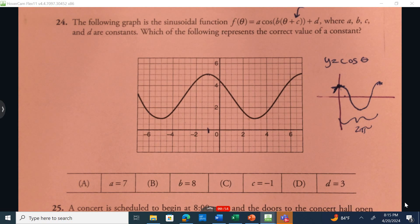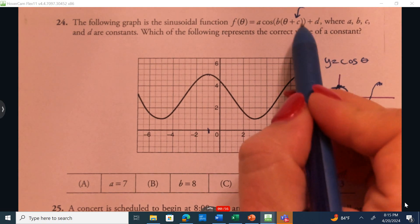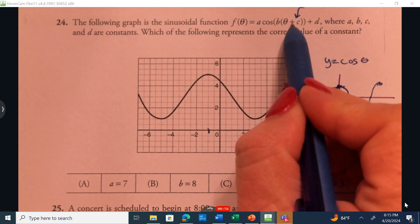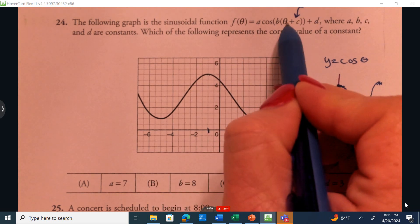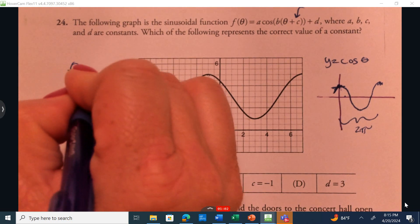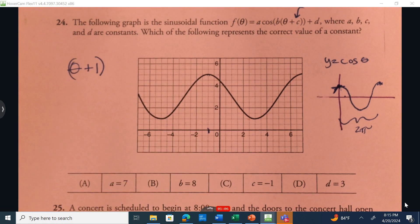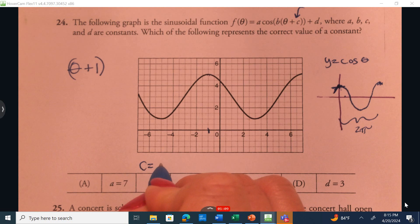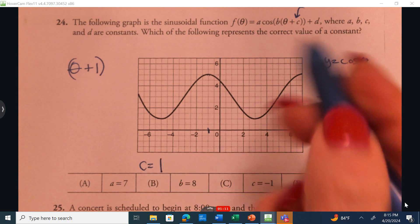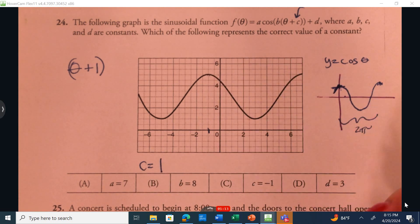Remember, inside parentheses are always opposite of what you think. So instead of writing theta minus 1, because it goes to the left one, we're going to say theta plus 1. So this should be theta plus 1, theta plus 1, or sometimes we see it as x plus 1, and that means that c is equal to positive 1. It's because it's been shifted 1 to the left.